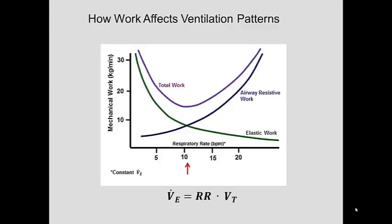Theoretically, the particular minute ventilation that we need to maintain good blood gas homeostasis can be arrived at from an infinite number of combinations of respiratory rate and tidal volume.